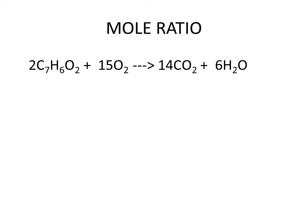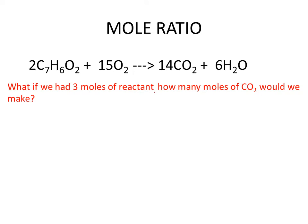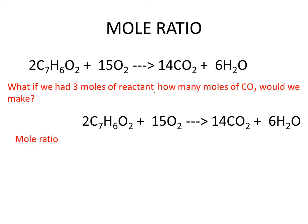How could we find out how much carbon dioxide we would make if we had 3 moles of reactant? We can work this out by using the mole ratio. We know from our equation that 2 moles of reactant needs 15 moles of oxygen and produces 14 moles of carbon dioxide and 6 moles of water. So we know that 2 moles gives us 14 moles of carbon dioxide. Therefore, 1 mole will give us 14 divided by 2. It follows that if we have 3 moles, we multiply the left-hand side by 3, then we need to multiply the mole ratio we have calculated by 3 to work out how much carbon dioxide we produce.